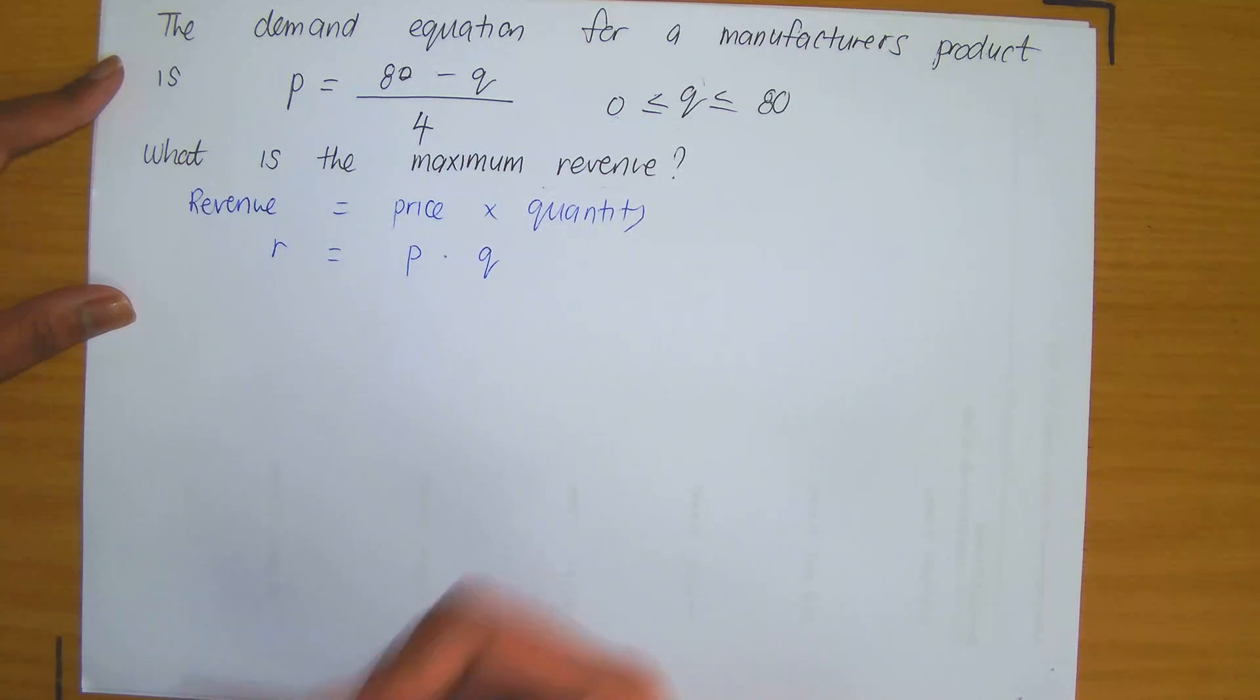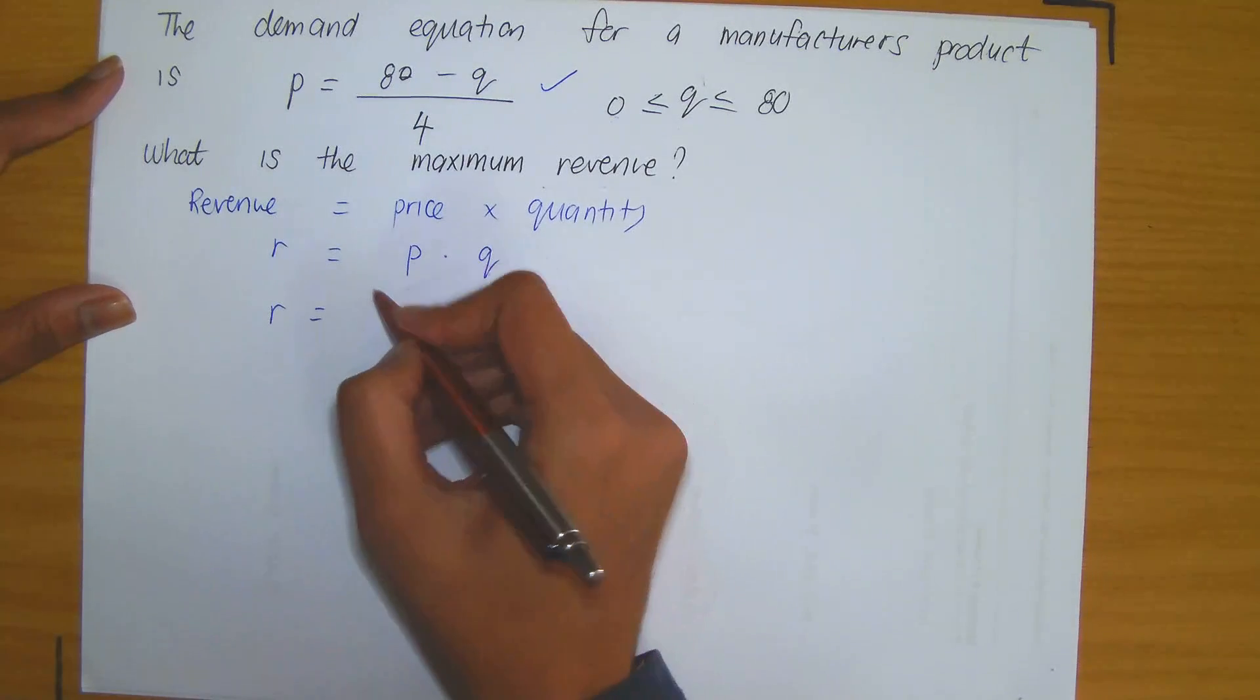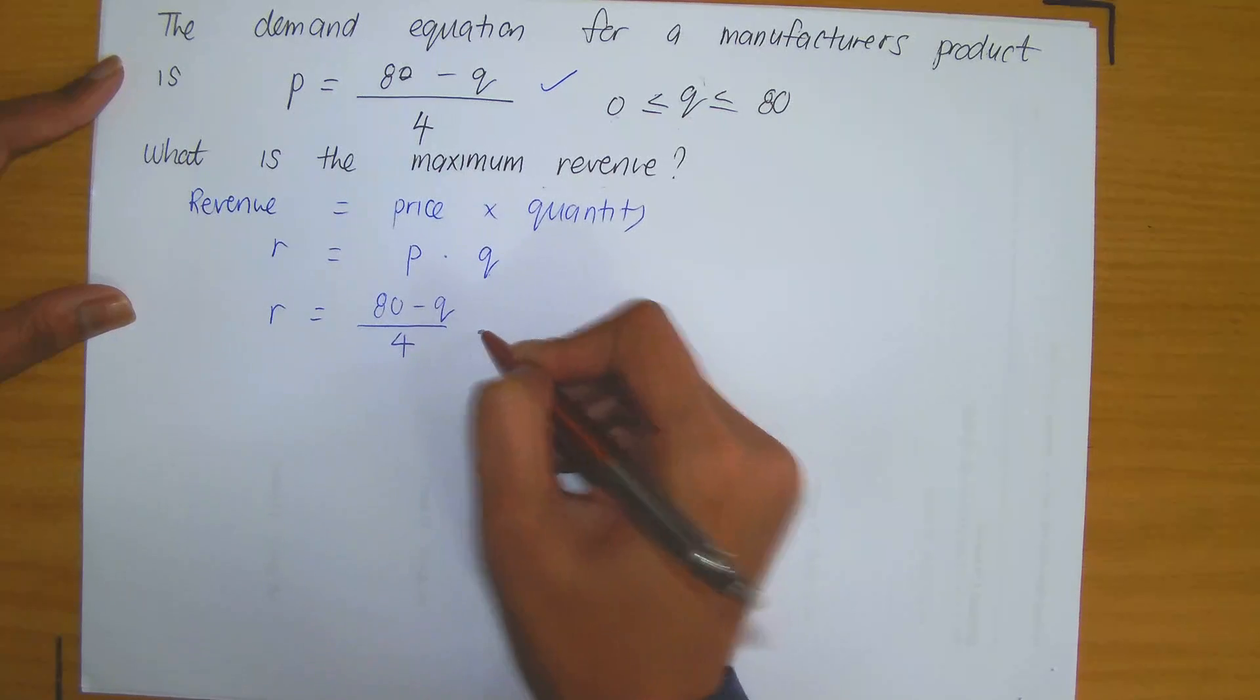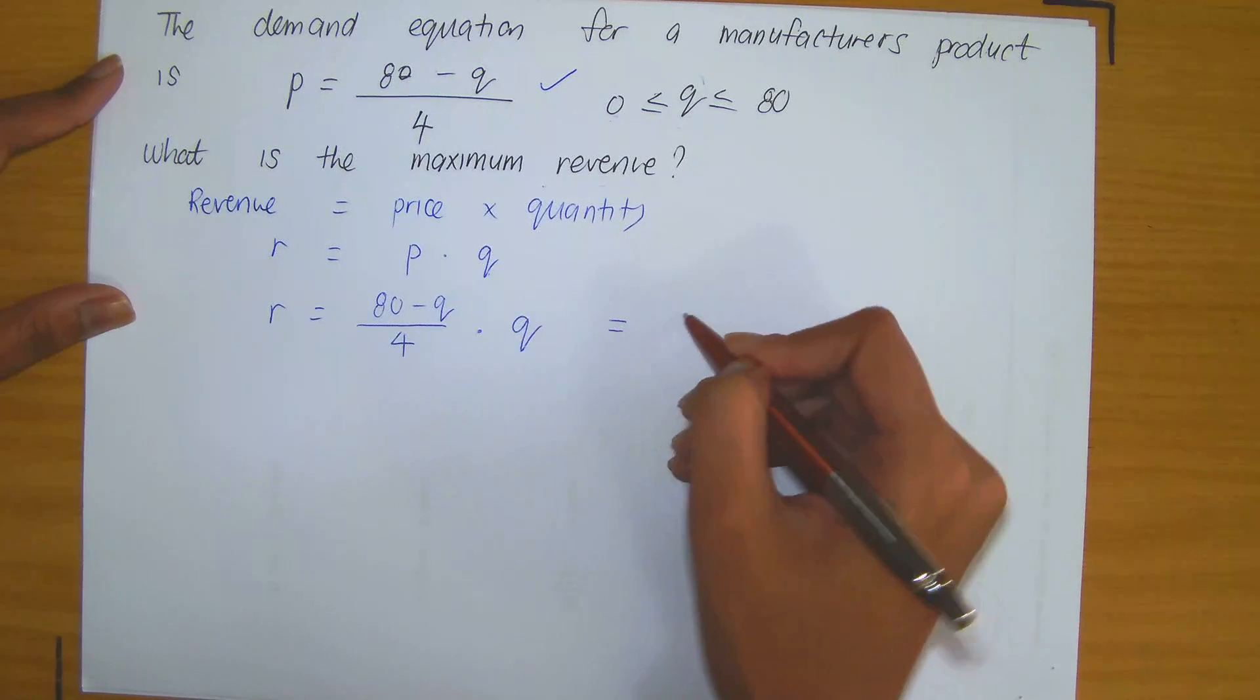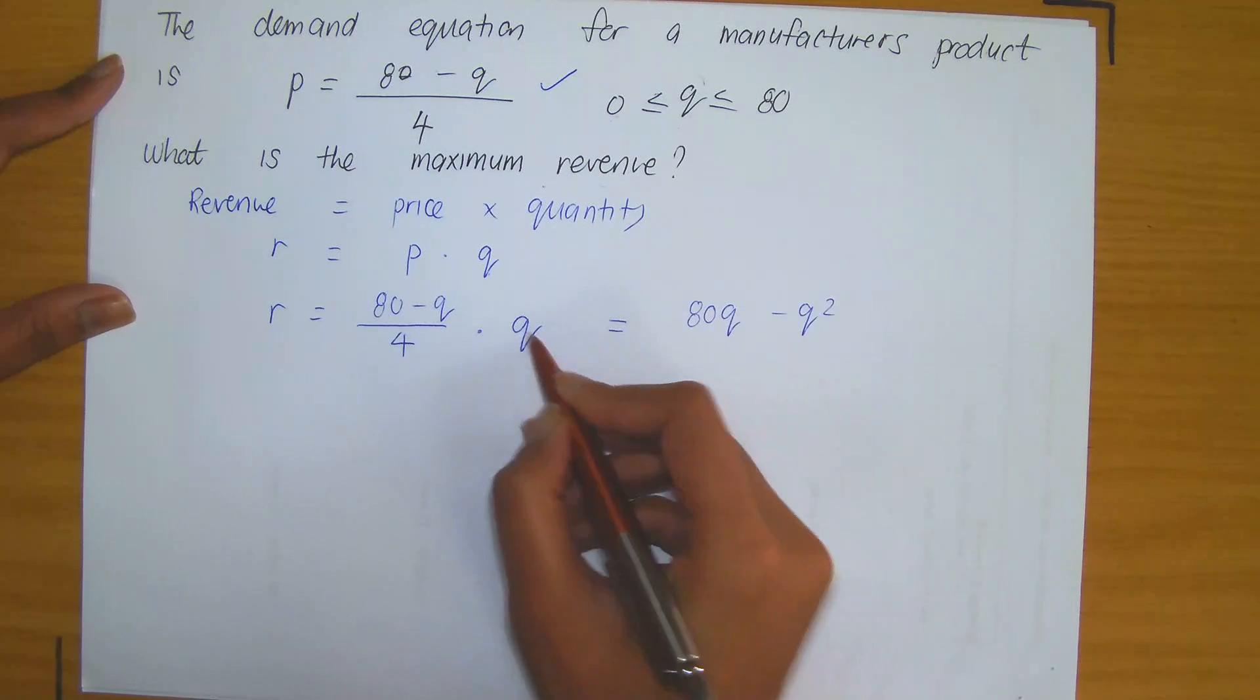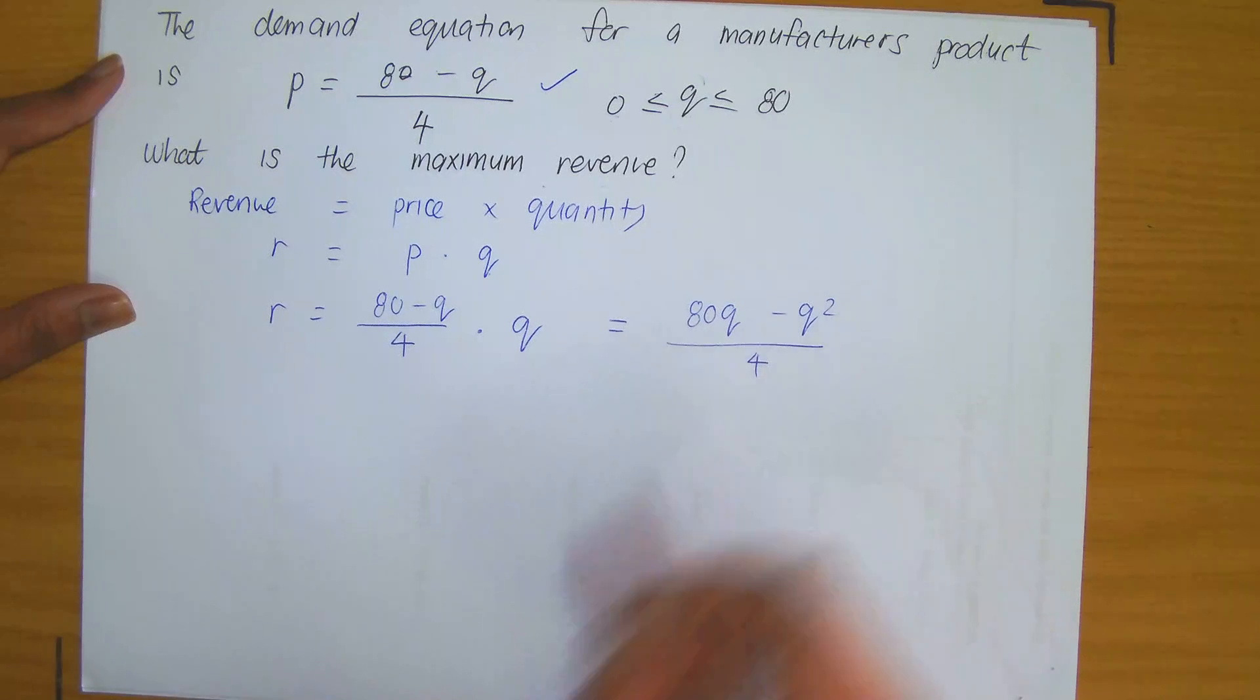So this is where step three comes in. Step three tells you to rewrite your function in terms of one variable only. But observe that we have the demand function. So P can be written as 80 minus Q divided by 4 times Q. So that means, upon simplification, that is 80 times Q minus Q squared, because I'm multiplying this term by Q divided by 4.